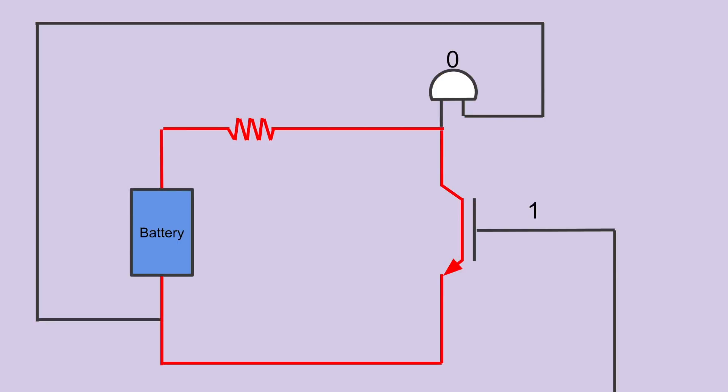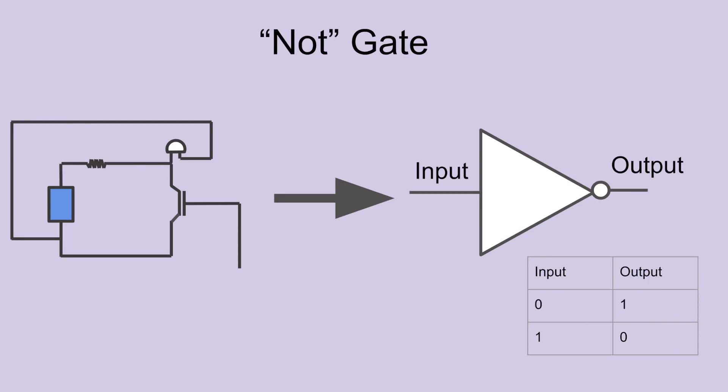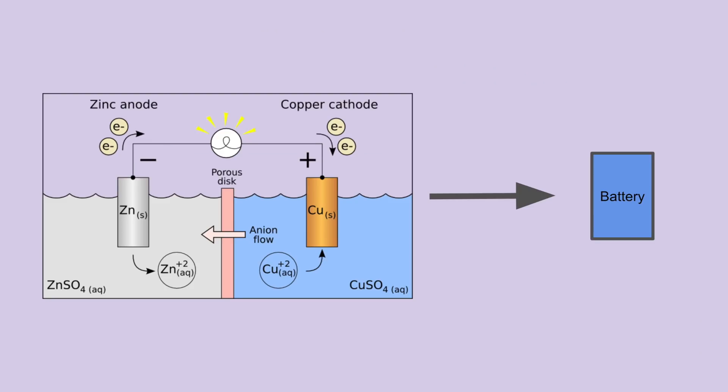Now the output is the opposite of whatever the input is. This circuit is the first of four tools that we will need to build our calculator. It is called a NOT gate, and we will use this symbol to represent it. It may feel like cheating to just replace the whole circuit with a random symbol, but it's no different than taking all the complex chemistry that goes into making a battery and replacing it with a rectangle.